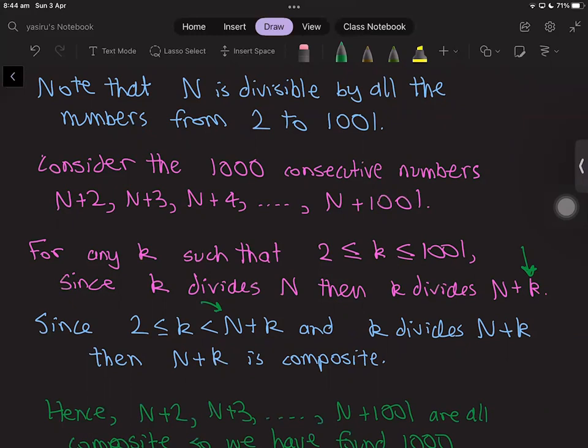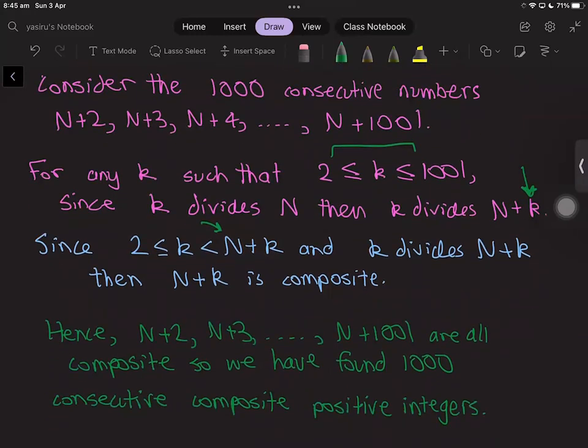This is why N+k is composite for all values of k from 2 to 1001. This is enough to prove that the numbers N+2, N+3, ..., up to N+1001 are all composite numbers.